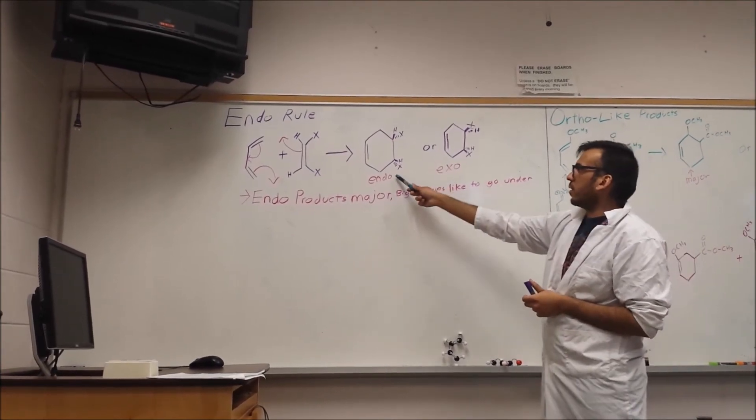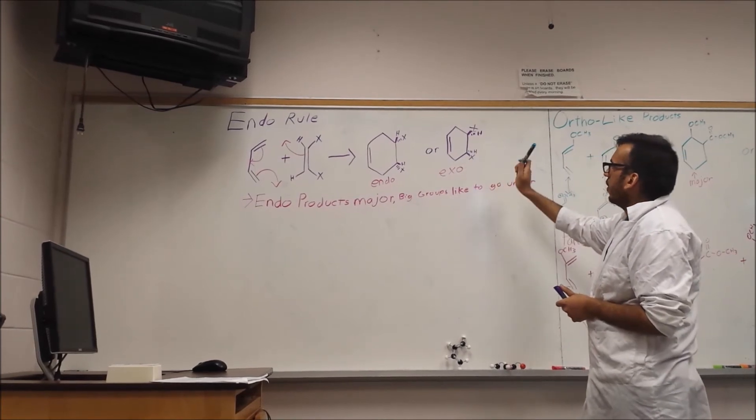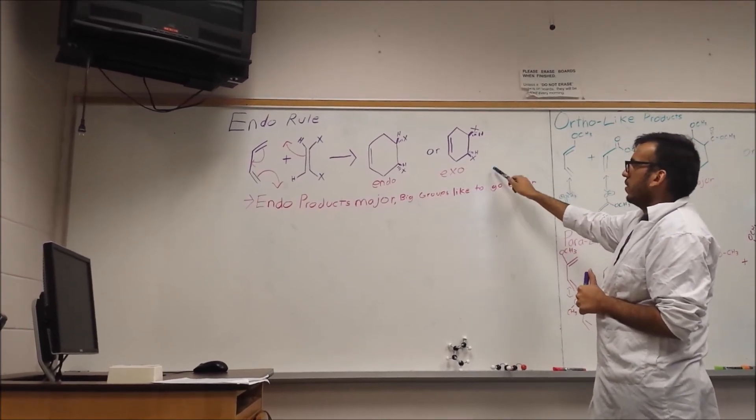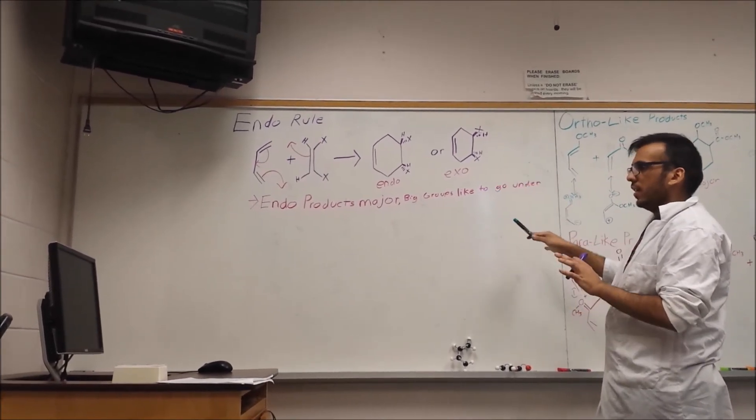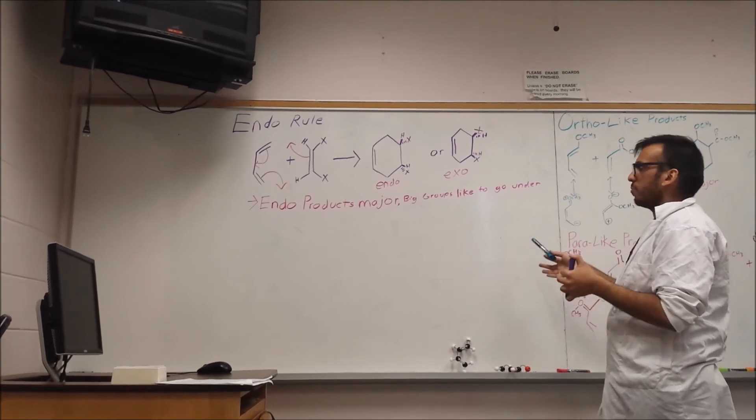So this is the endo product with the bulky groups underneath the plane of the ring, and this is the exo product with the bulky groups above the plane of the ring. Now this isn't necessarily a set in stone rule, there's exceptions to it.